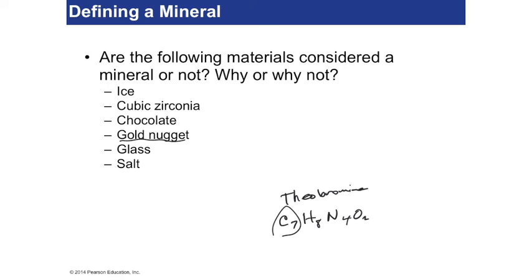Glass, we already mentioned, is amorphous — meaning there's no specific definite shape to its crystal structure, so it would not be a mineral. But salt was also one we looked at. That's the halite crystal, which has a very definite composition and a specific structure. It's naturally occurring, there's no carbon in it, so salt would certainly be a mineral. It's mined — you have salt mines just like you have silver mines.